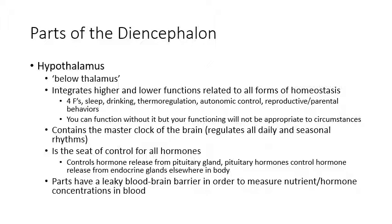The hypothalamus also contains the master clock of the brain, which is the basis for all daily and seasonal rhythms in the brain and behavior — for species with specific mating seasons, that's controlled by the master clock. It receives blue light from the eyes to know when it's daylight or night. Throughout the day, blue light signals to the master clock that it's daytime; when blue light stops at night, the hypothalamus tells the pineal gland to start manufacturing melatonin so you can sleep. Looking at screens late at night can interrupt melatonin production because the master clock thinks it's still daytime.